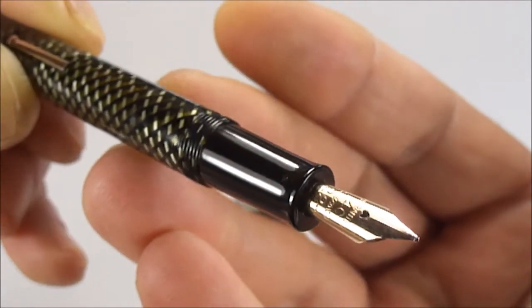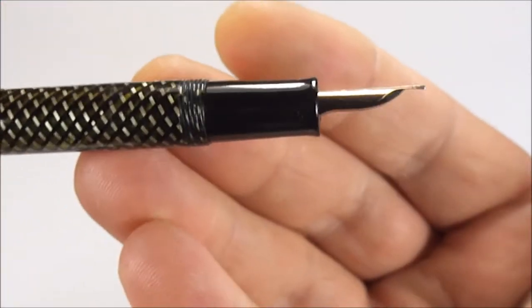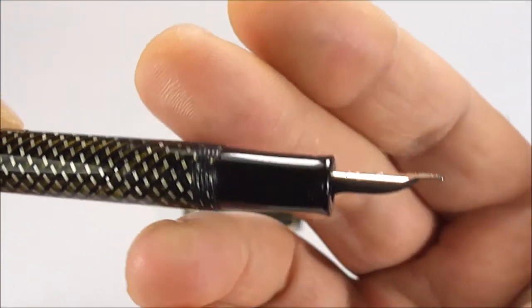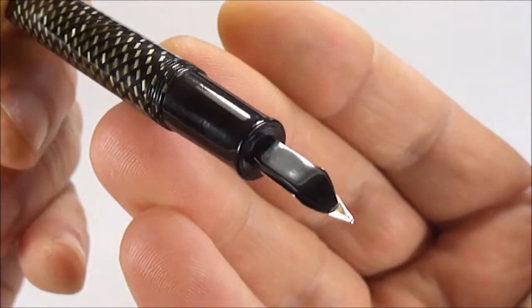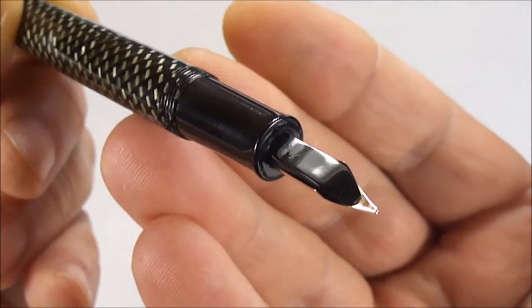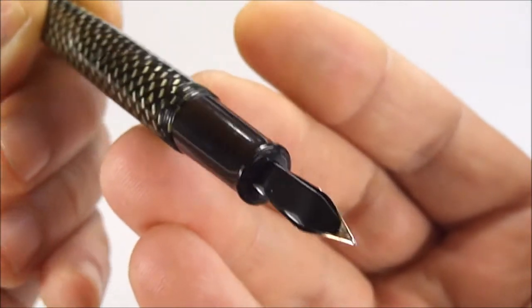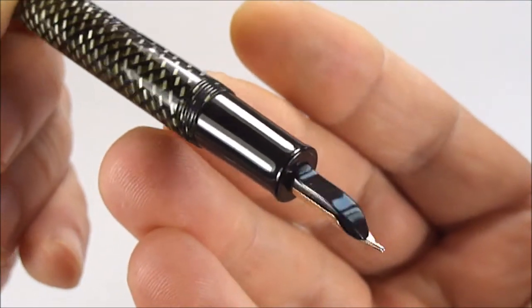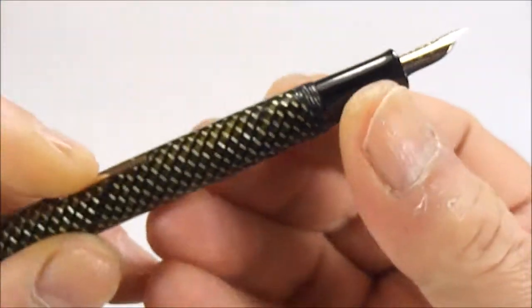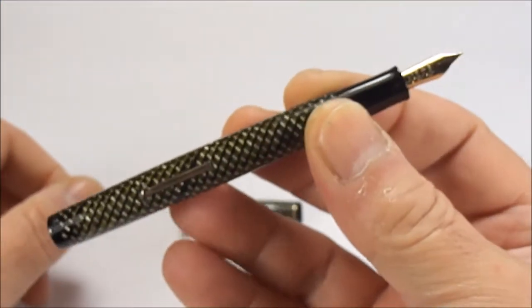Again, everything's been cleaned, everything's been polished, in beautiful condition. There's a sideways view of the nib. Let's show you the feed underneath. Quite unassuming feed underneath, just a plain standard feed underneath as you can see.